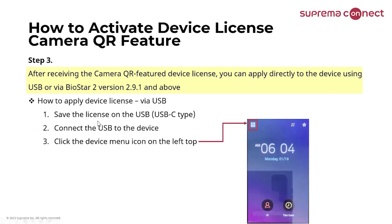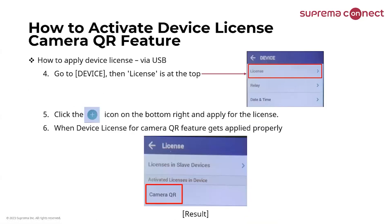After receiving the license information, there are two ways to apply it. One is via USB directly to the device. After receiving the camera QR feature device license, you can apply it directly using a USB-C type connection or via BioStar 2. To apply via USB: save the license file on a USB drive — it must be USB-C type to connect to the device. Connect the USB to the device, click the device menu icon on the top left, go to Device Menu then License, click the plus icon on the bottom right, and apply the license. When applied properly, you will see the activated license on the device with camera QR showing as a result.